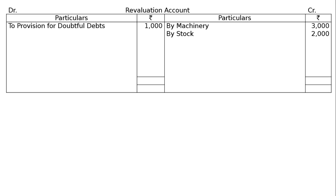Part E: There is a liability of Rs. 2,000 being the outstanding salary payable to employees of the firm. This liability is not included in the creditors. Partners decided to show this liability in the books of account of the new firm. To outstanding salary — increase in liability — Rs. 2,000.